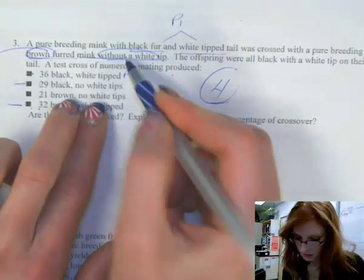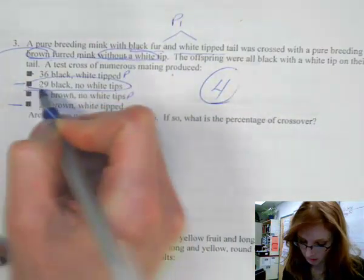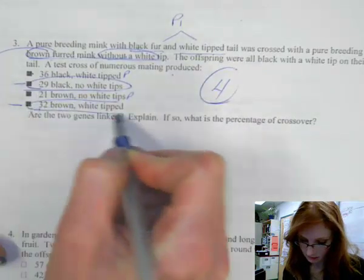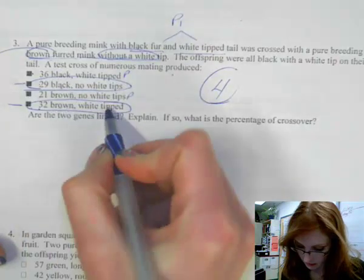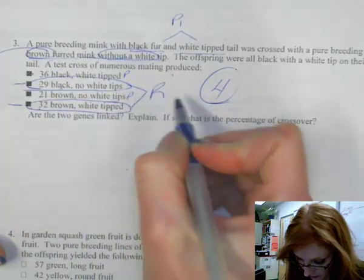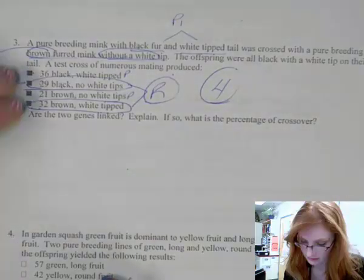Now, my method would be figure out the parents. Black, white tip. That's a parent. And I need brown without a white tip. Brown, no white tip. So then my recombinants would be black, no white tip. Brown, white tip.